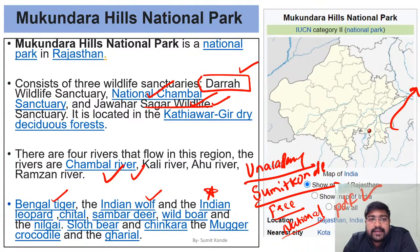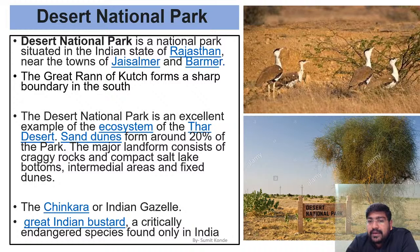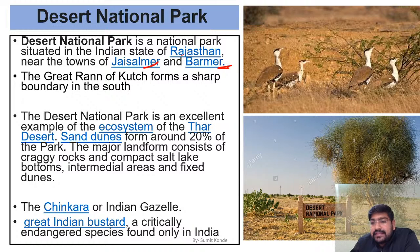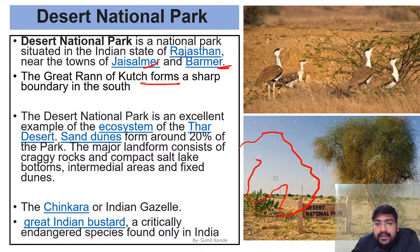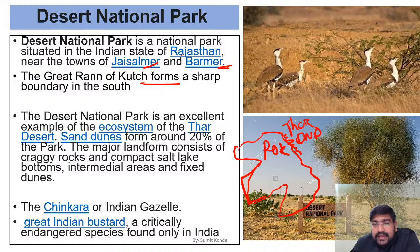Next is Desert National Park, which is very unique among India's 105 national parks. It is located in the Jaisalmer-Barmer region of Rajasthan, entirely in the Thar desert. Great Rann of Kutch forms a sharp boundary to the south — so if you look at Gujarat's Rann of Kutch, it is directly below the Desert National Park, forming that sharp southern boundary.